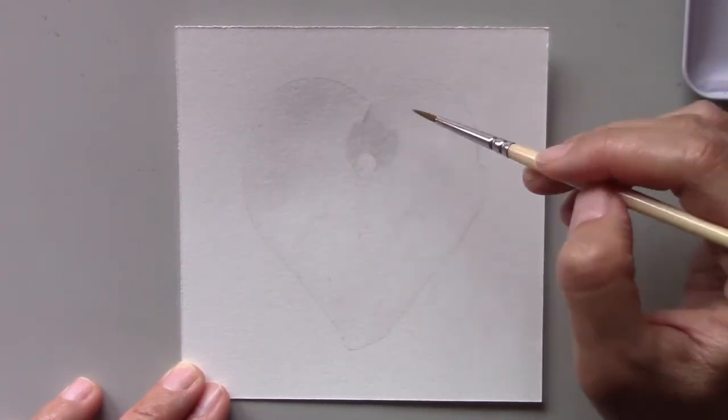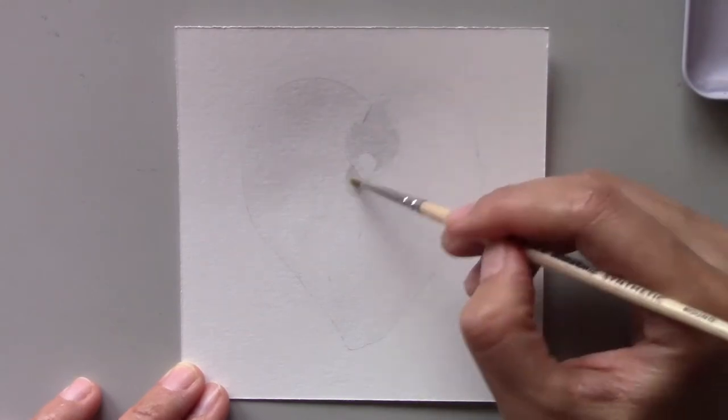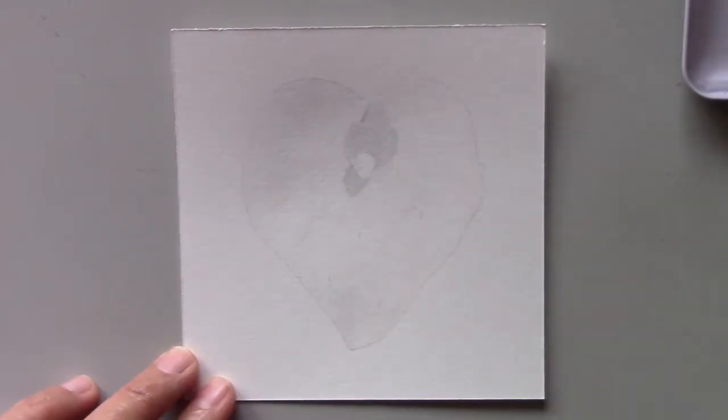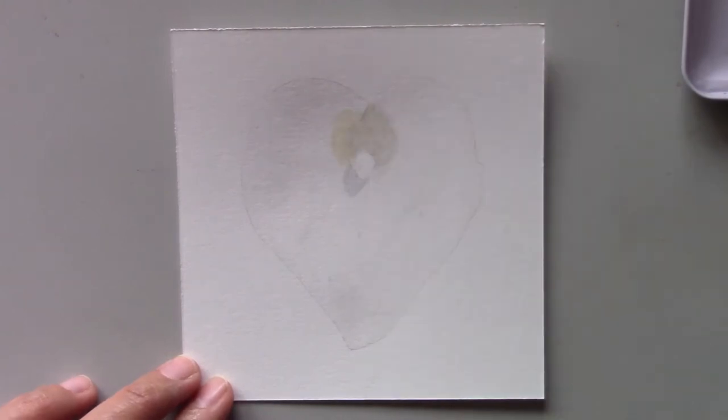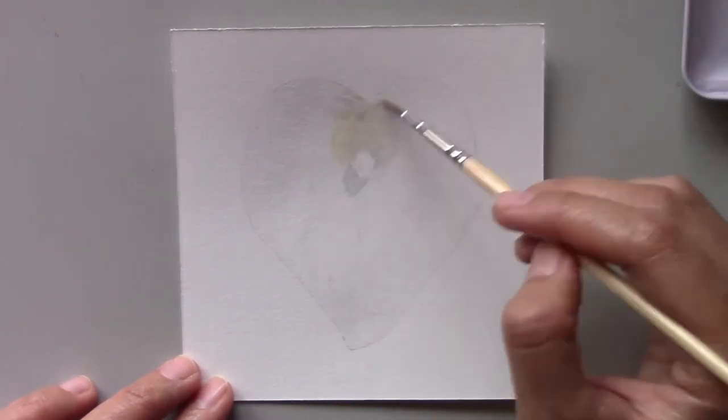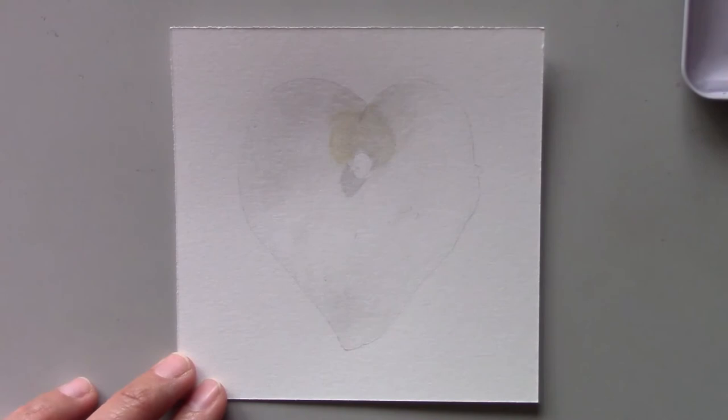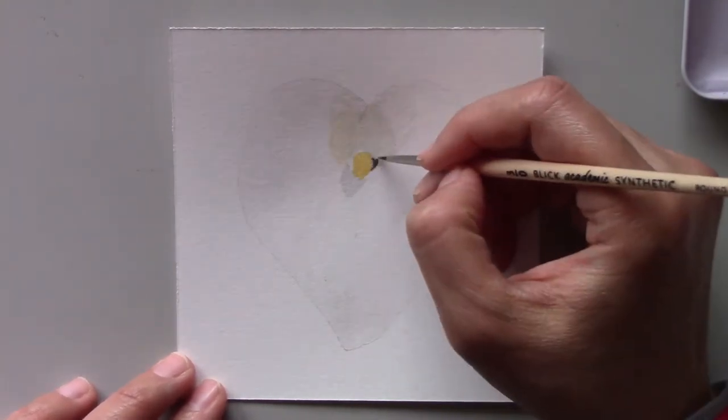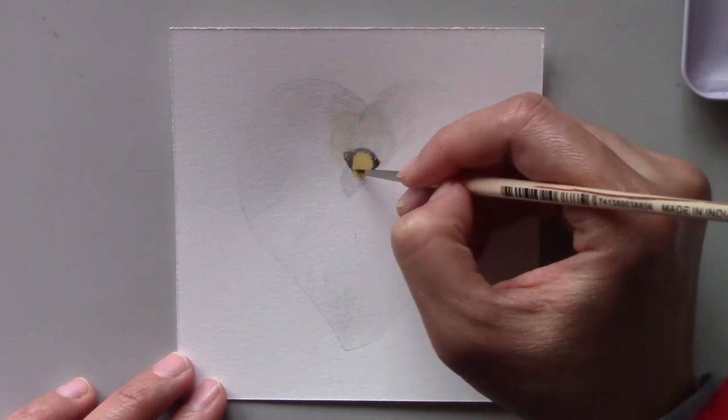I have a much better photo reference for this flower so that should make it a bit easier. This is a white calla lily flower. It has a really interesting shape. It is shaped like a heart. Isn't it lovely and interesting?